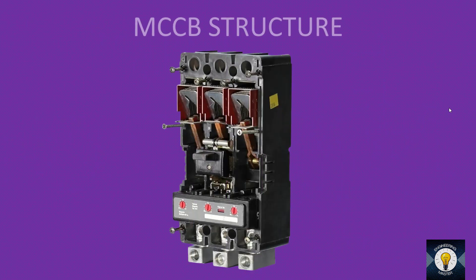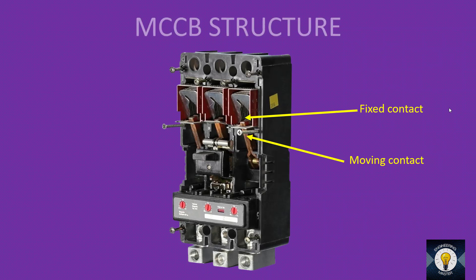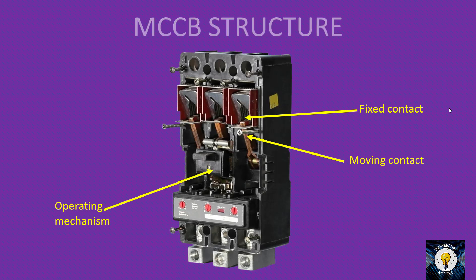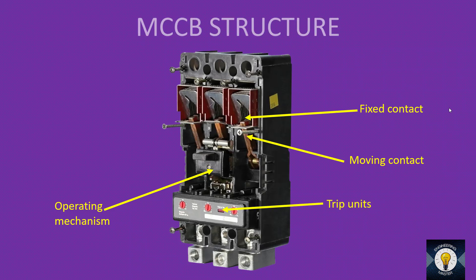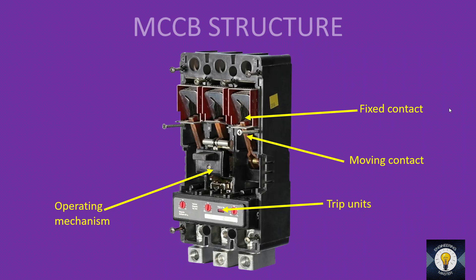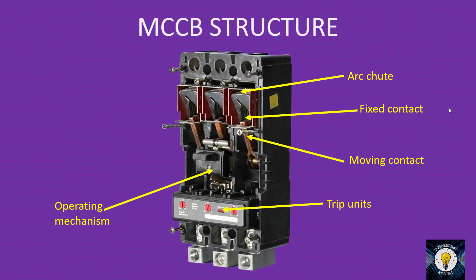If we look at an MCCB structure, we can see the fixed contact and the moving contact. Through the fixed and moving contacts, electricity flows. While tripping, the moving contact will fall apart and interrupt the electricity. Next is the operating mechanism — an on/off knob switch. Below this there is a trip unit, which consists of a bimetallic strip for overload tripping and a magnetic trip unit like a solenoid for short circuit tripping. Next is the arc chute, which is used to extinguish or quench the arc produced due to the sudden disconnection of the fixed and moving contacts.